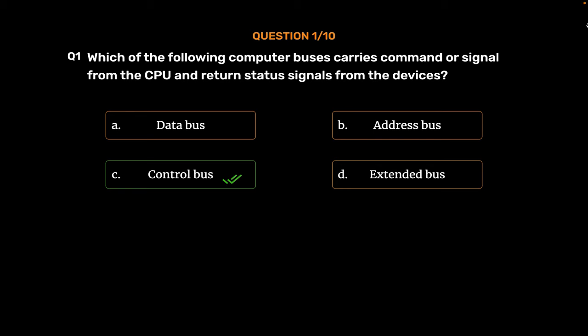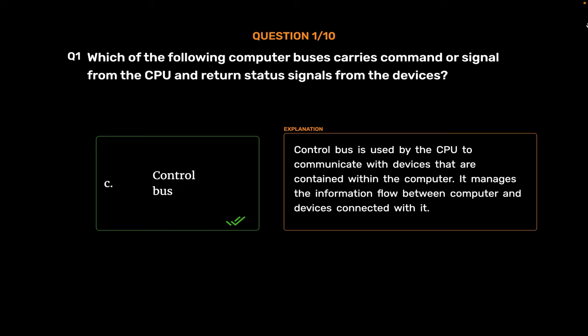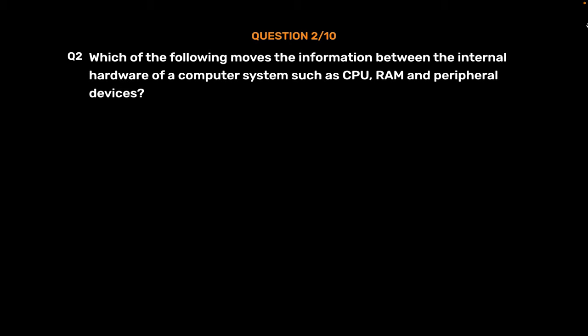Control Bus. The Control Bus is used by the CPU to communicate with devices that are contained within the computer. It manages the information flow between the computer and devices connected with it.